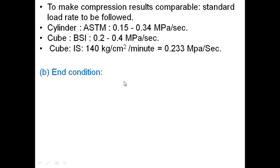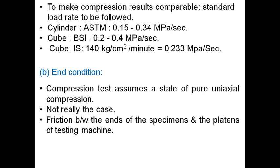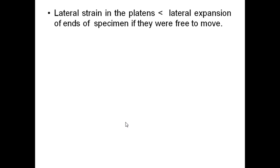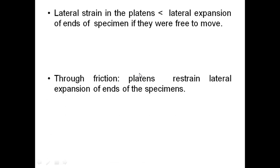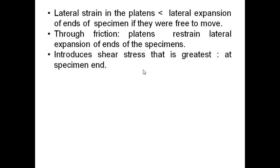Now let us see end conditions. The compression test assumes a state of pure uniaxial compression, but it is not really the case. The friction between the ends of the specimen and the platens of the testing machine always exists. Due to frictional force, there are differences in Young's modulus and Poisson's ratio, that is E and 1/m for steel and concrete. Lateral strain in the platens is less than lateral expansion of ends of specimen if they were free to move. Through friction, the platens restrain lateral expansion of ends of the specimen.